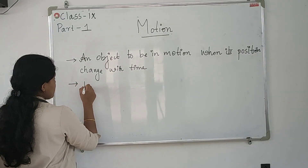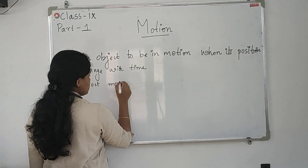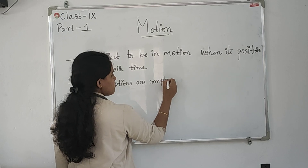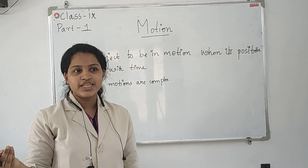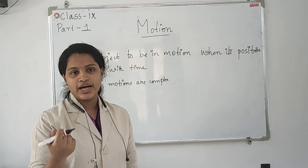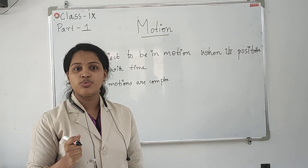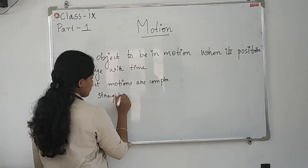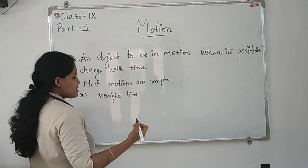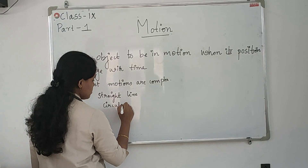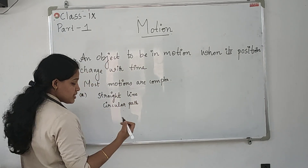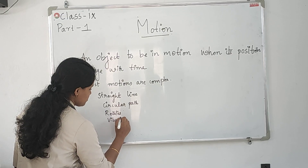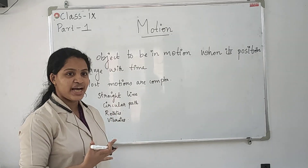Most motions are complex. Sometimes some objects may move in a straight line, some others take a circular path, some may rotate, and few others vibrate. All these are examples of different kinds of motion.